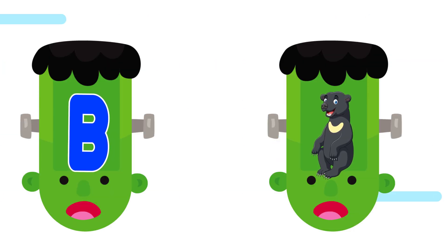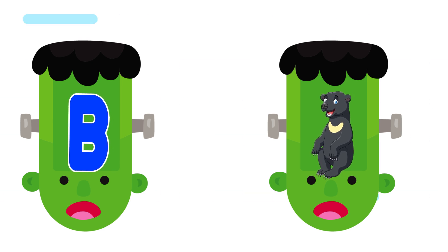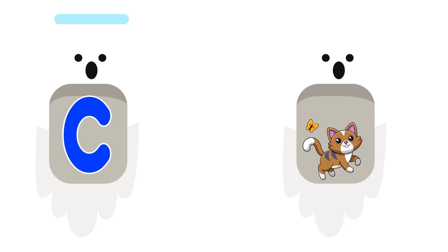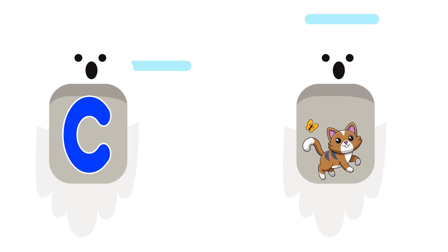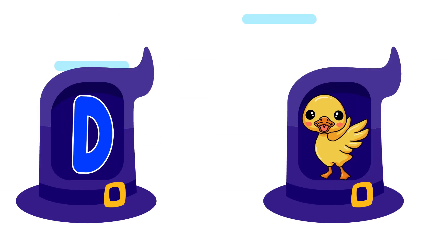B is for bear. B, buh, bear. B, buh, bear. B, bear. C is for cat. Kuh, kuh, cat. Kuh, kuh, cat. C, cat.